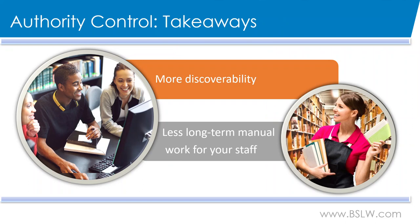Participation in resource sharing networks, cooperative ventures such as NACO, dependence on internet search capabilities, and recent trends in outsourcing technical service operations are also strong arguments for libraries to implement proper authority control procedures. While it is true that some discovery layers don't connect the authority records to utilize the cross-reference fields, the process of authority control will still ensure that all headings for a single author are standardized and corrected, thus creating a benefit for your staff and patrons.